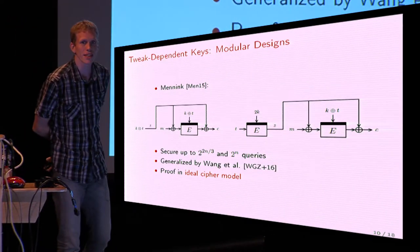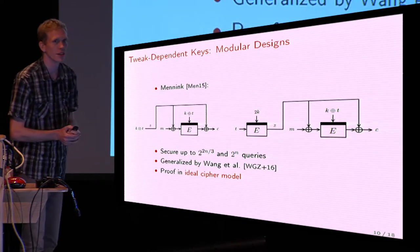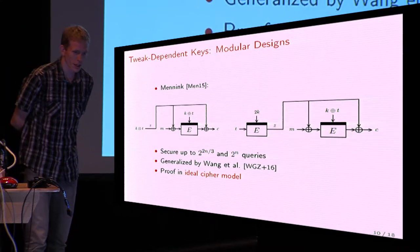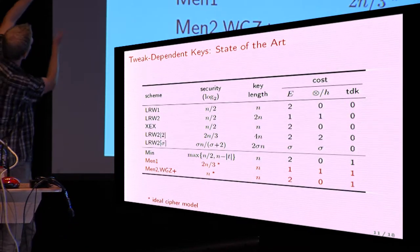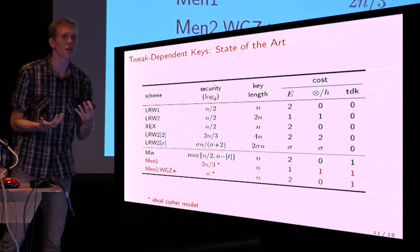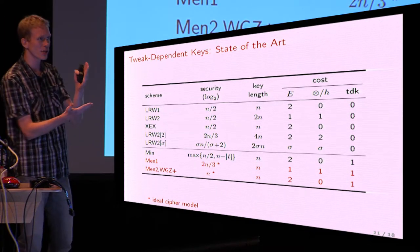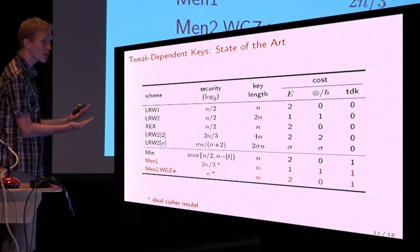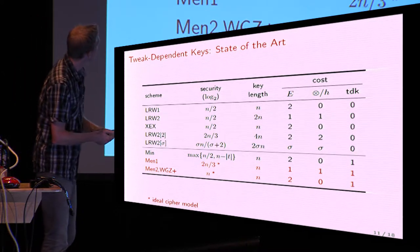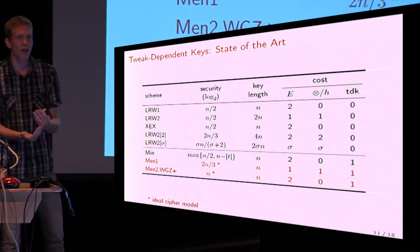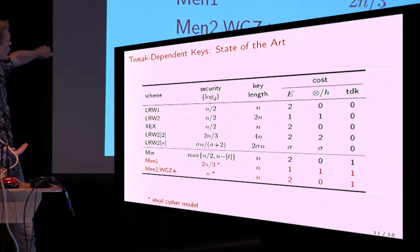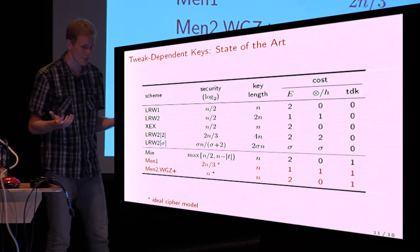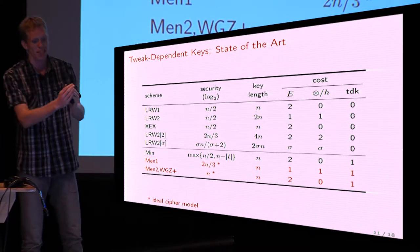There is a twist: the security proof is in the ideal cipher model, whereas the other schemes were in the standard model. Looking at the state of the art, the top five rows are non-rekeying schemes — the key to the block cipher is always the same and is not influenced by the tweak — and you can only get optimal security in the limit. The rekeying scheme achieves optimal security fairly efficiently, but only in the ideal cipher model. The question now is: can we get the best of both — optimal security of an efficient scheme in the standard model?